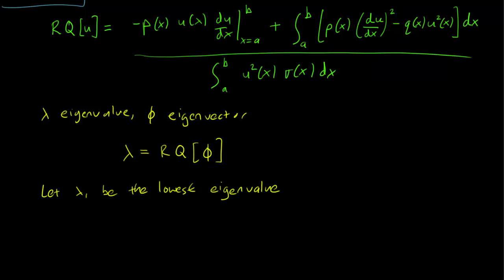But there is always a lowest eigenvalue, let's call it lambda 1, and it has an eigenfunction. And of course that's lambda 1 equals RQ phi 1, where phi 1 is the eigenfunction corresponding to the lowest eigenvalue.